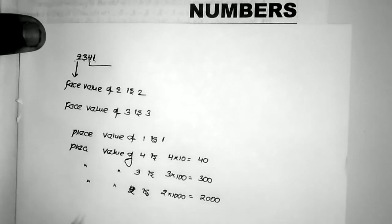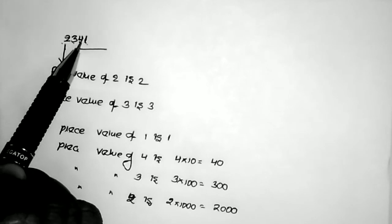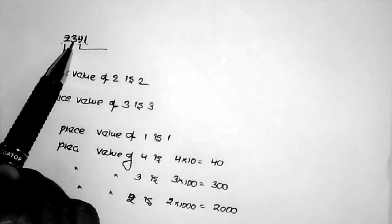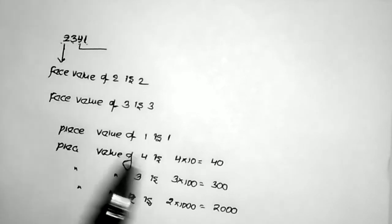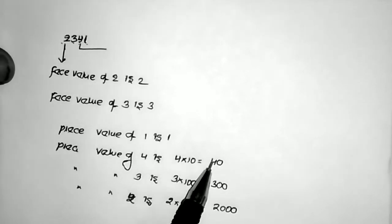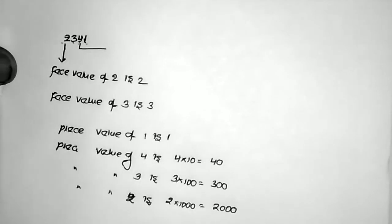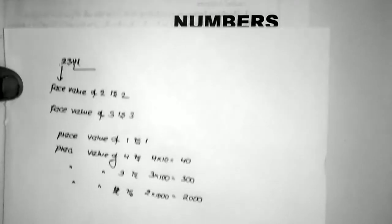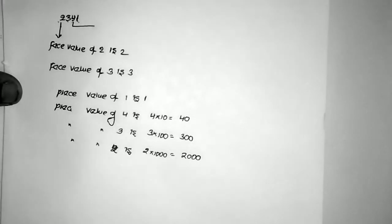So we have: units place, tens place, hundreds place, thousands place. This is the place value. This is the face value. This is the information about place value and face value.